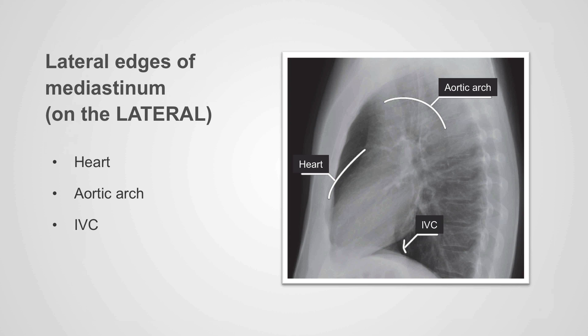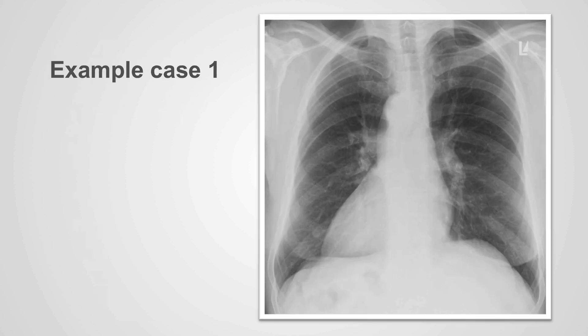Additional edges that can be seen on a lateral x-ray include the anterior border of the heart, the inferior vena cava, the posterior border of the heart, and the aortic arch.